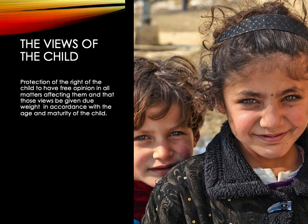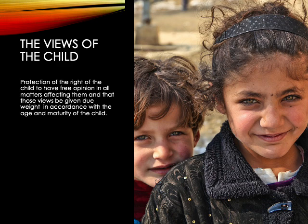Our fourth principle is that we look at the views of the child. Children should be able to express themselves, have an opinion in matters that affect them, and those opinions should be given due weight according to the age and maturity of the child. We've all negotiated with two-year-olds who have the negotiation skills of sophisticated hostage negotiators. We need to make sure that we are listening to children and taking into account their opinions and views.